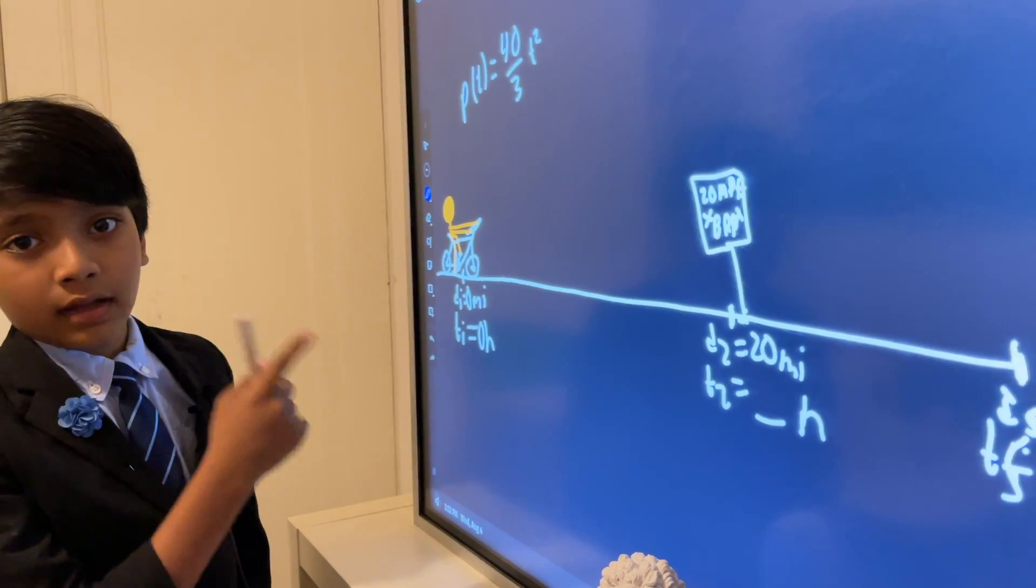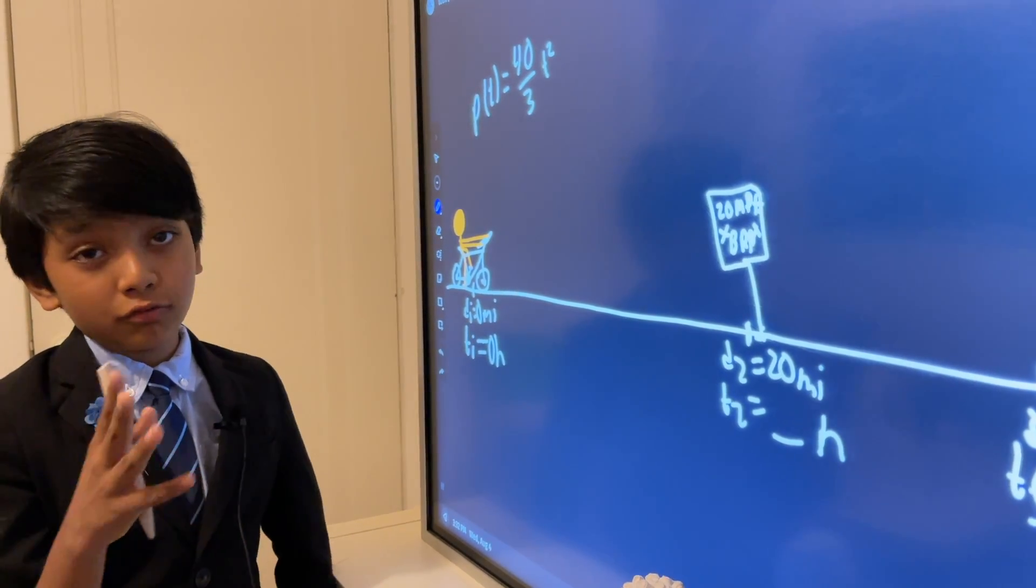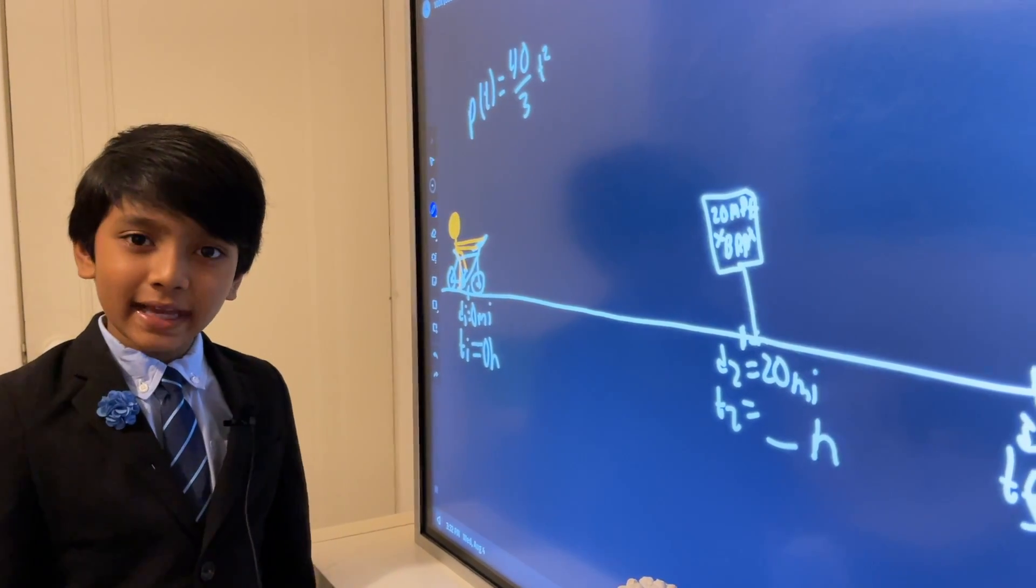And then I would cover it with two approaches. An algebraic approach, which was average velocity, and an instantaneous approach, or a calculus approach, with instantaneous velocity.